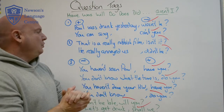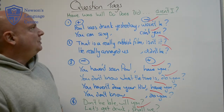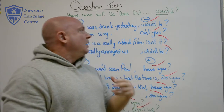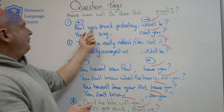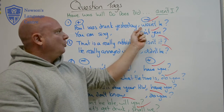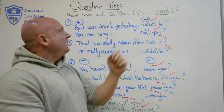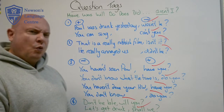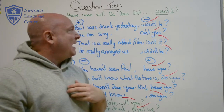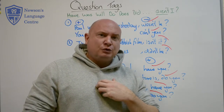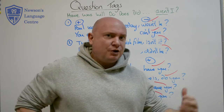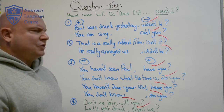Question tags use auxiliaries like have, was, will, do, does, did — and I'll explain 'aren't I' or 'am I not' at the end. Starting with positive verbs or auxiliaries followed by a negative question tag, always after a comma. For example: 'Paul was drunk yesterday, wasn't he?' — with intonation going up. By doing this I'm actually asking a real question, because maybe I'm not sure about it and I need someone to respond: yes he was, or no he wasn't.